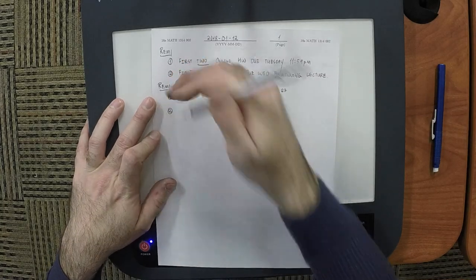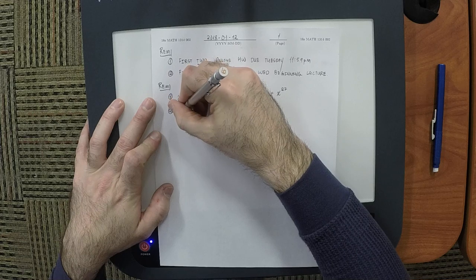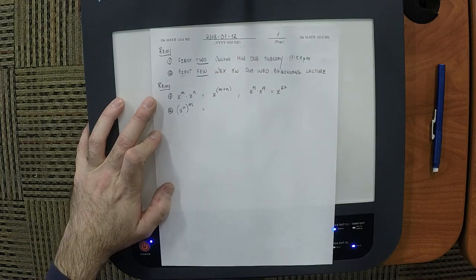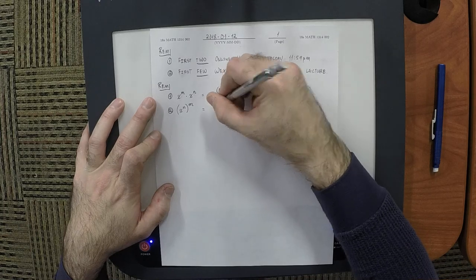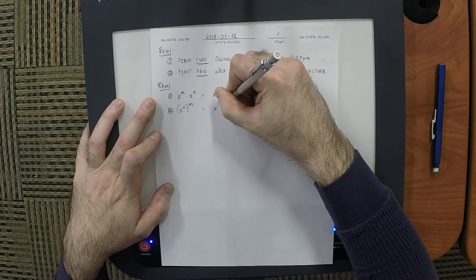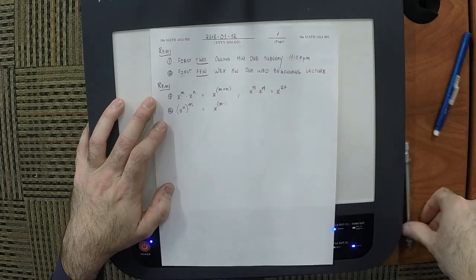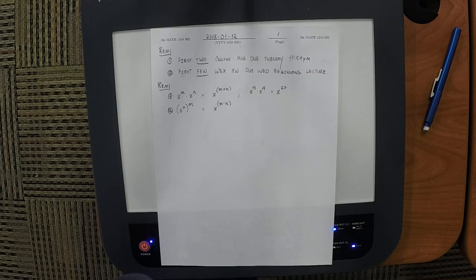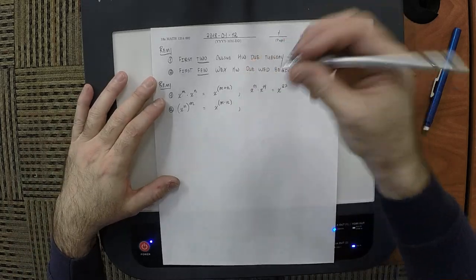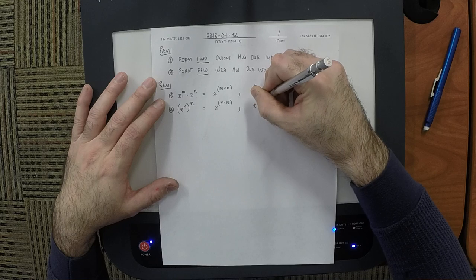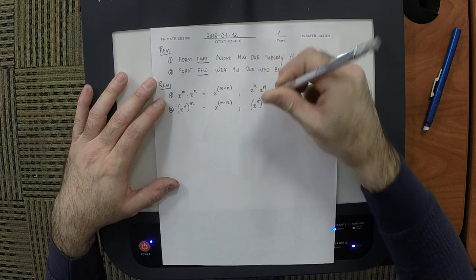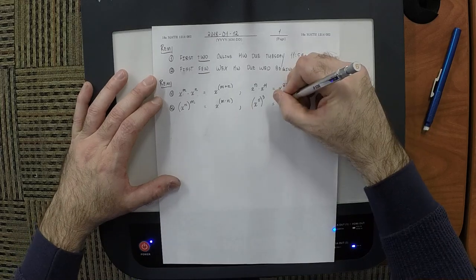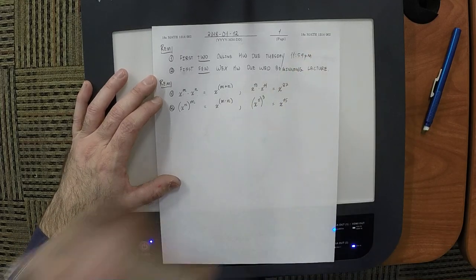Second rule: x to exponent n, all to exponent m — what is this? X to exponent m times n. For example, x to exponent 5, all raised to exponent 3 — what would it be? X to 15.